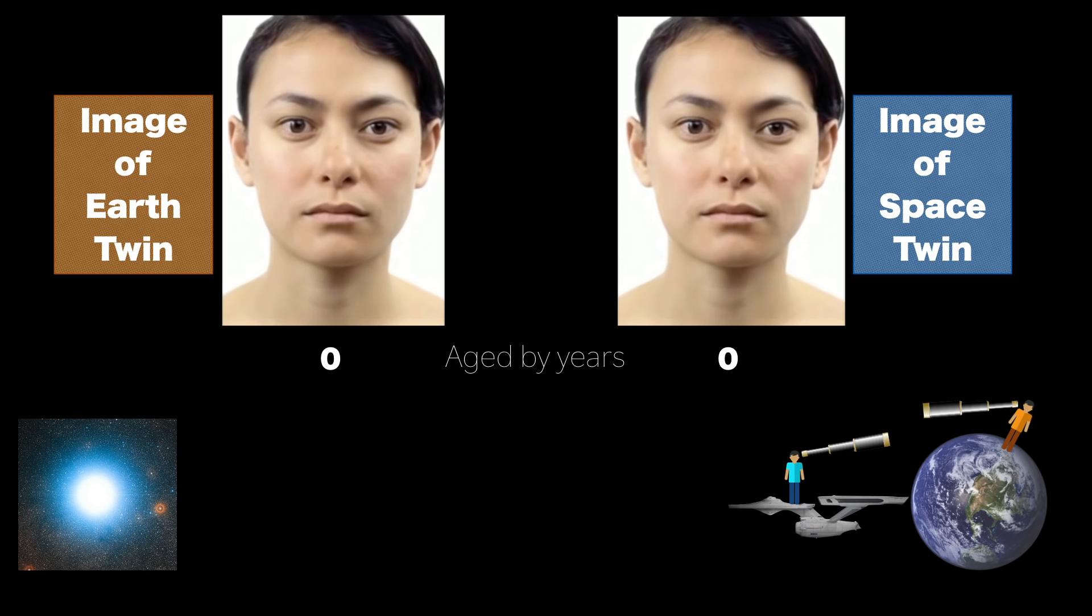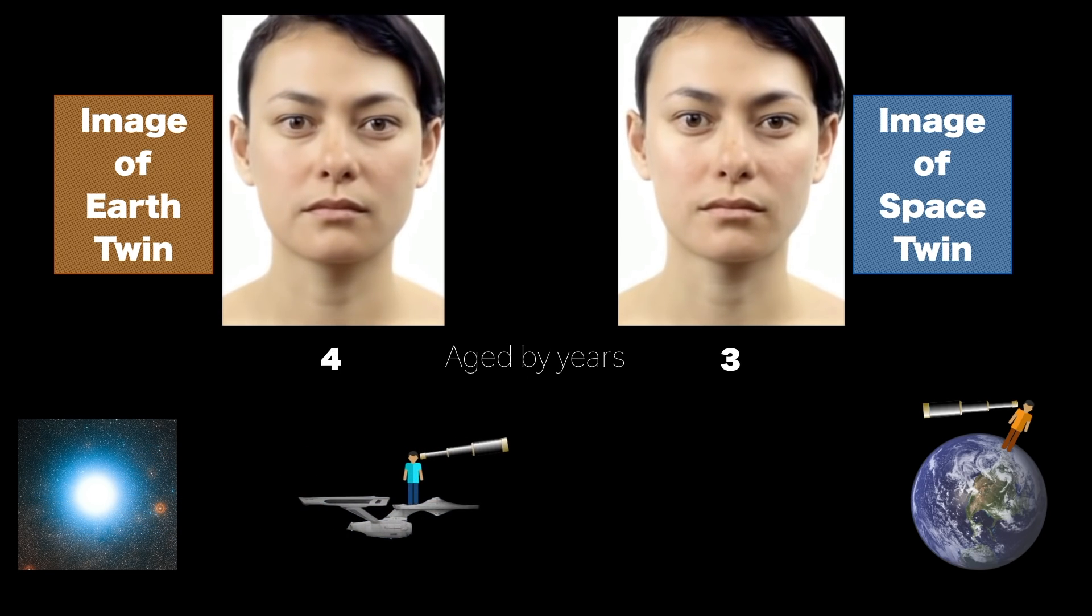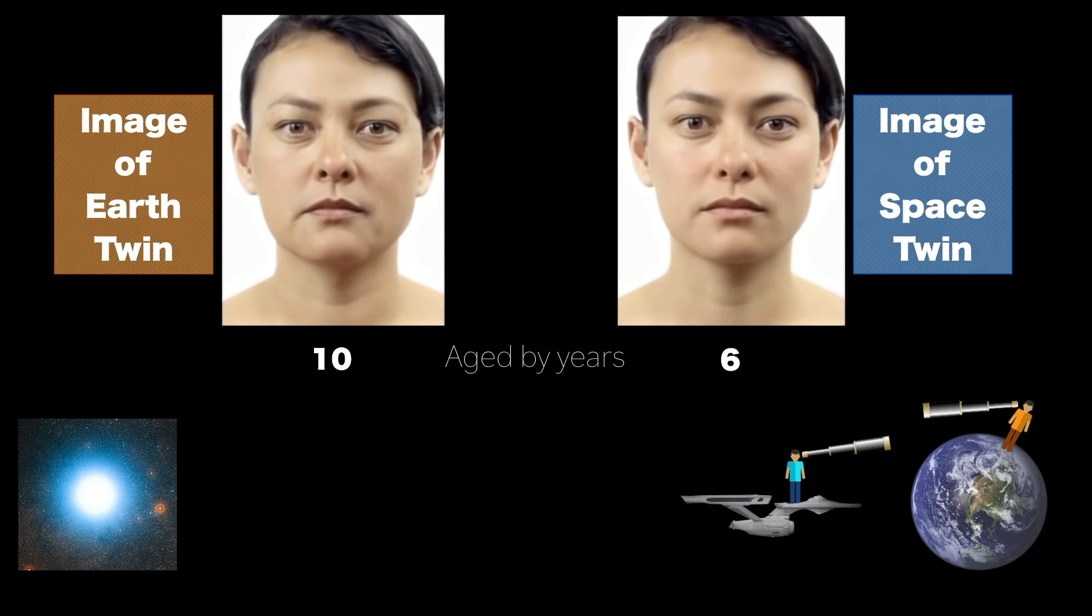On screen, for two twin sisters, it would look something like this. That's how the twin paradox is solved. Einstein was right.